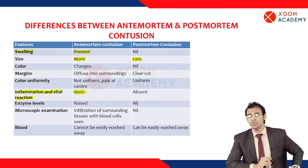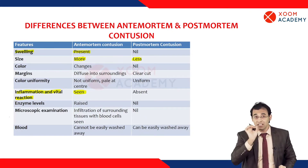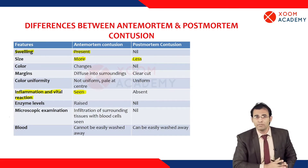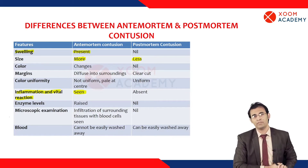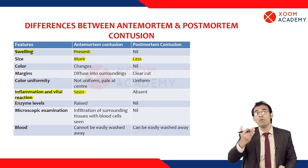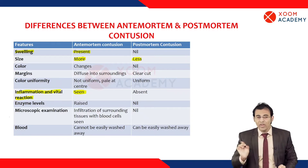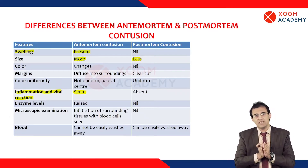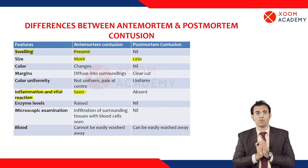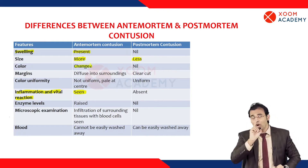Regarding color changes: after a blunt hit there is rupture of small blood vessels and extravasation of blood internally. This causes rupture of RBCs, followed by breakdown of hemoglobin into hemosiderin, then biliverdin, then bilirubin. From day 1 to day 14, different colors appear. Color changes are seen in ante-mortem bruises — remember, bruises and contusions are the same thing — and not in post-mortem.